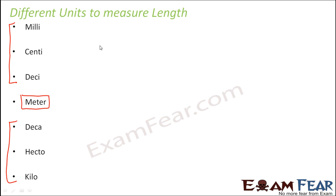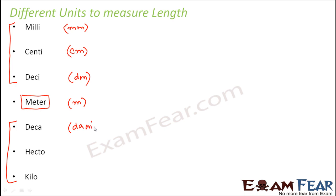Now for the abbreviations: millimeter is written as mm, centimeter as cm, decimeter as dm, meter as m, decameter as dam (to avoid confusion with decimeter), hectometer as hm, and kilometer as km.